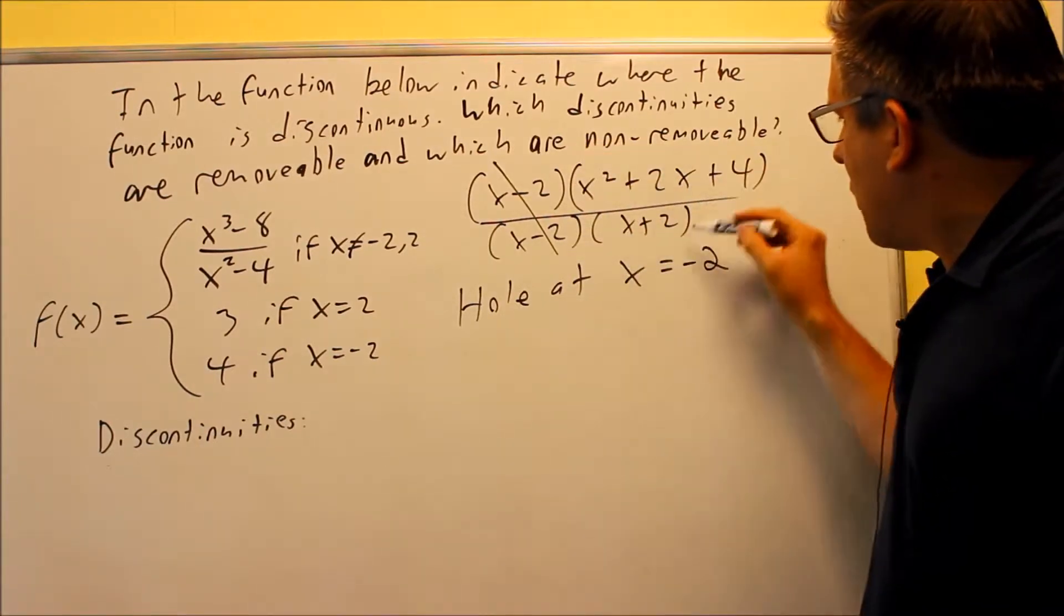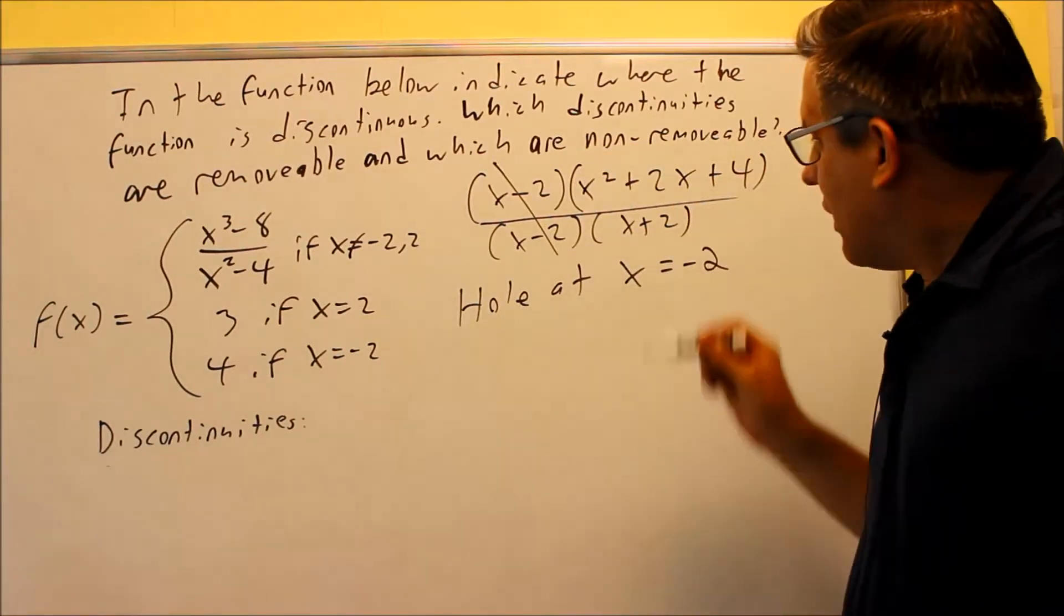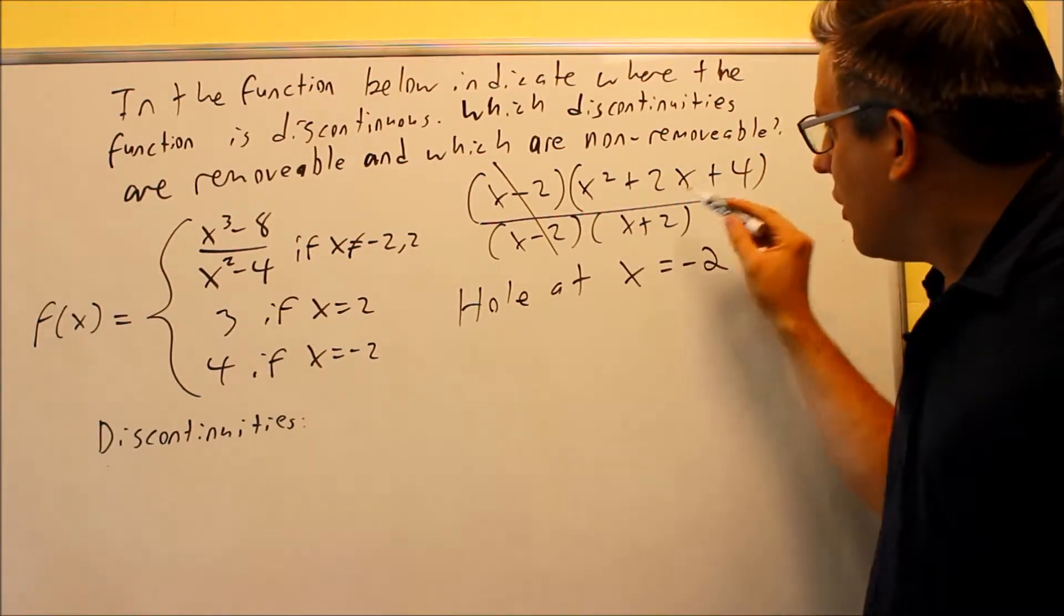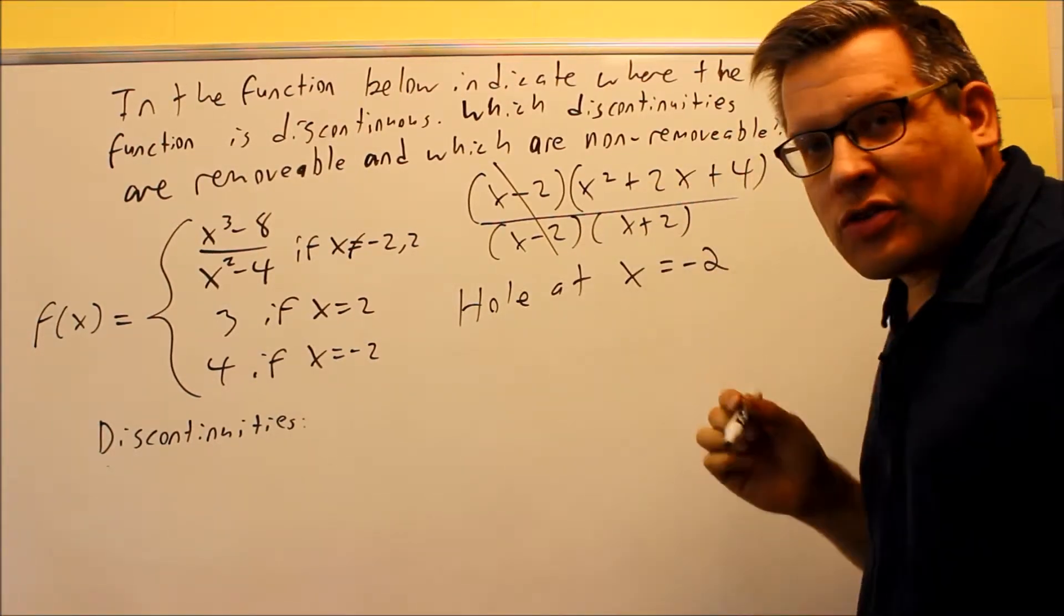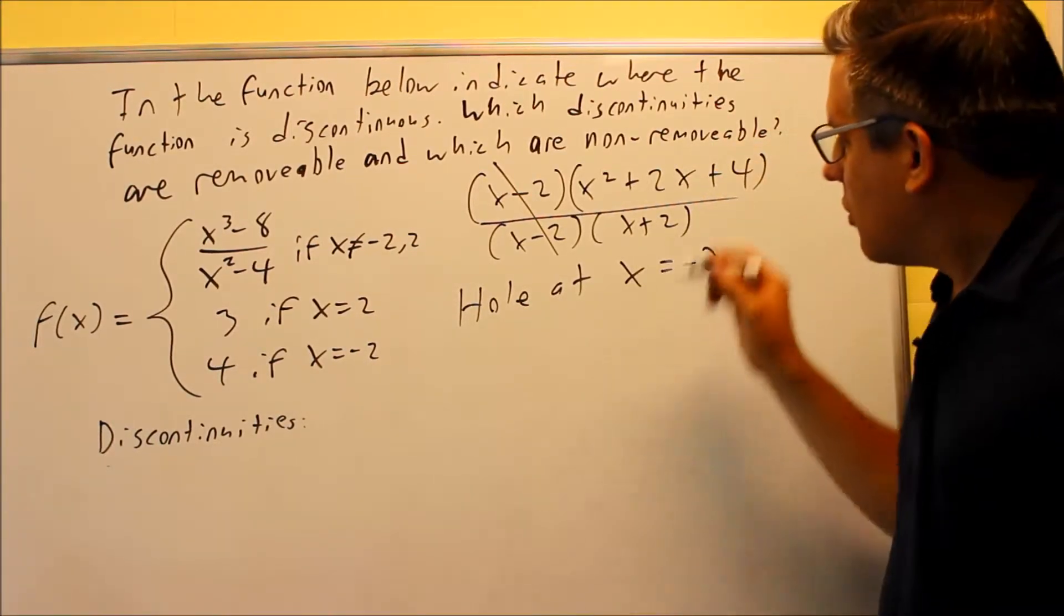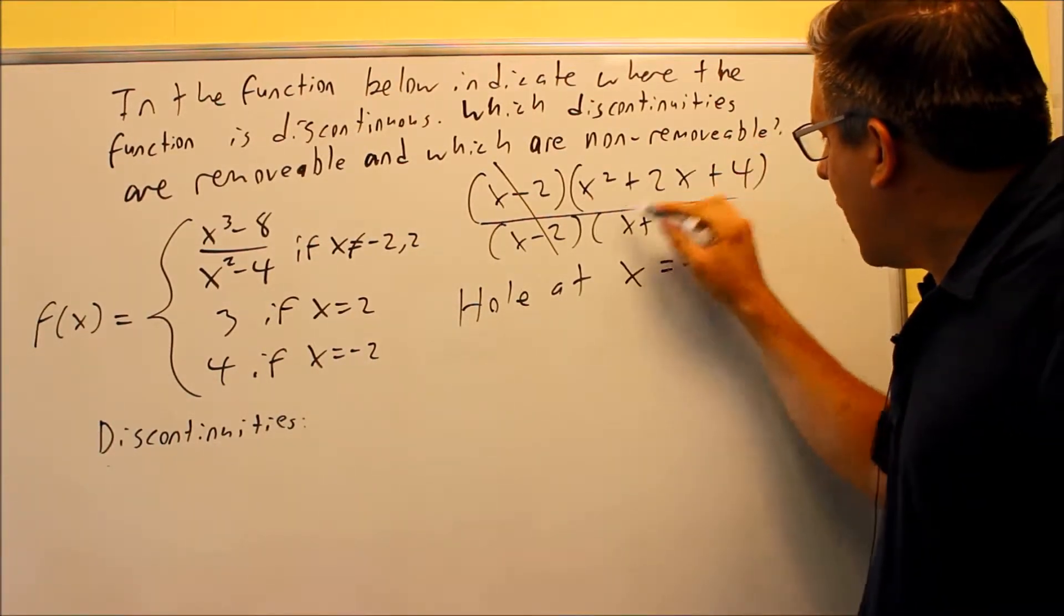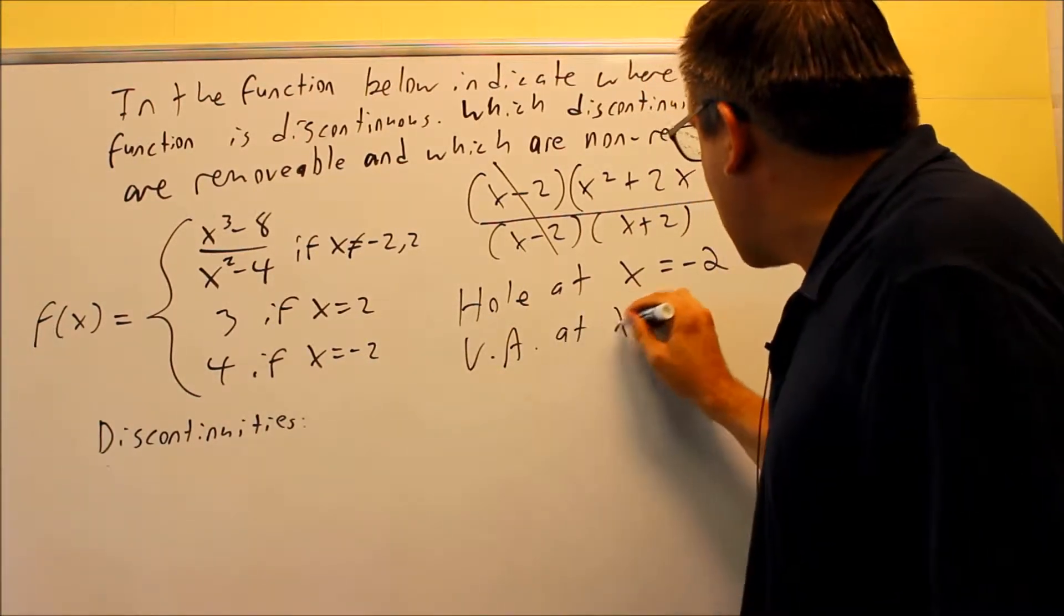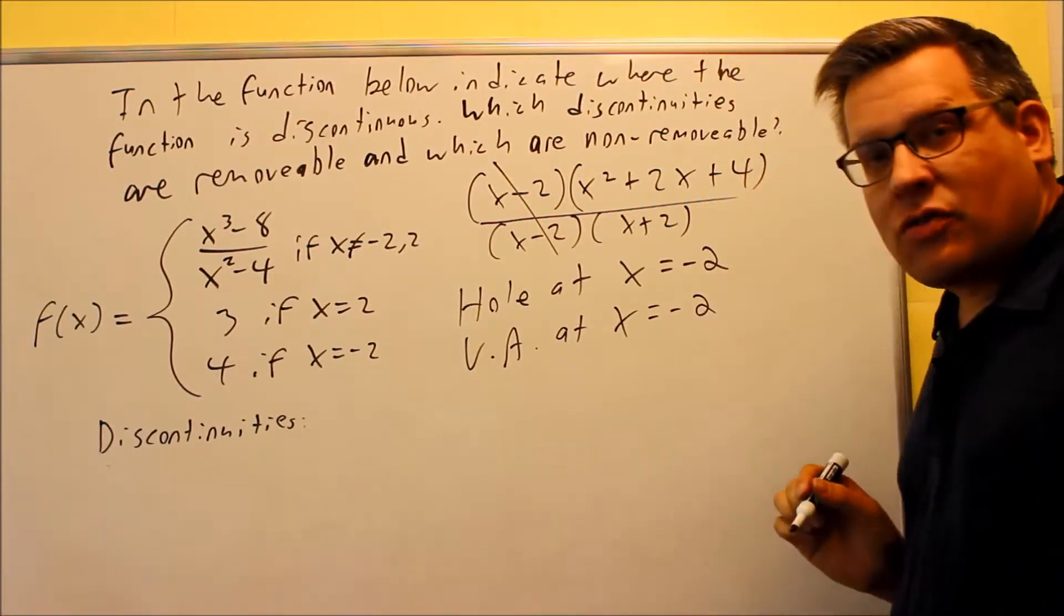What I'm left with is this part down below, x plus 2. I can't cancel that because whenever you do difference of cubes, the other part you're left with is going to be a non-reducible polynomial, which means I can't factor it. So because of that, no matter what, I'm going to have a vertical asymptote. So I have a VA, a vertical asymptote, at x is equal to negative 2.